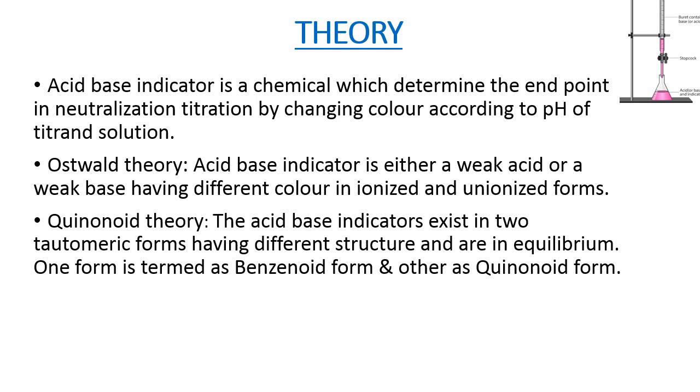According to Oswald theory, the acid-base indicator is either a weak acid or a weak base having different color in ionized and unionized forms. In acid solution, the excess of H+ ions will depress the ionization of the indicator and the color will be that of the unionized form. Alkali will promote removal of hydrogen ions from the system with an increase in the concentration of the ionized form.